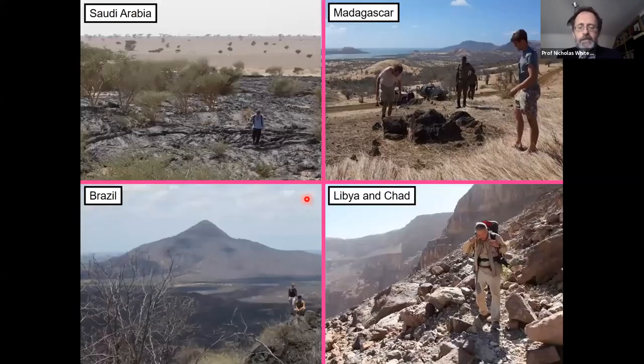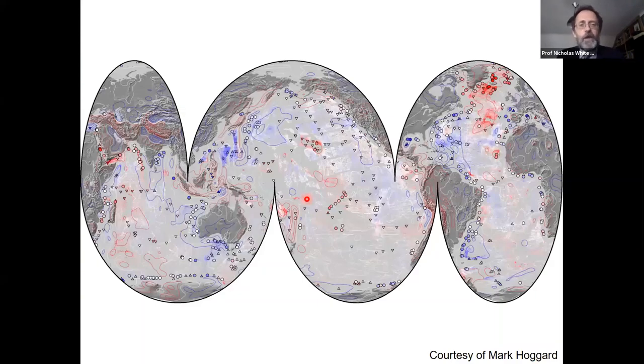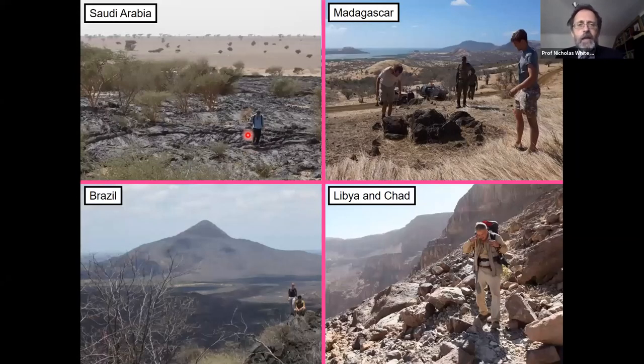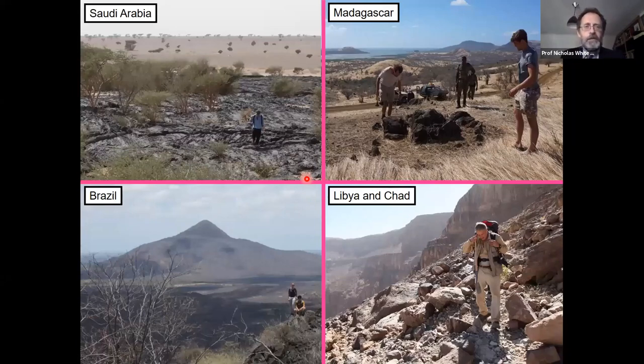One of the things Mark did in his PhD was assemble a large database of industry and academic data, shown in blue and red respectively. These data enable us to construct a dynamic topography map of the world. I could spend the rest of my 20 minutes just talking about this map, which contains lots of hidden treasures, but I must move on.